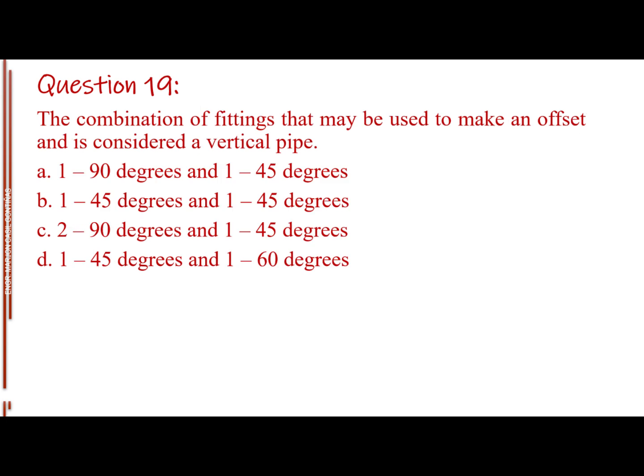Question number 19. The combination of fittings that may be used to make an offset and is considered a vertical pipe. Letter A, 1-90 degrees and 1-45 degrees. Letter B, 1-45 degrees and 1-45 degrees. Letter C, 2-90 degrees and 1-45 degrees. Letter D, 1-45 degrees and 1-60 degrees. The answer is Letter B, 1-45 degrees and 1-45 degrees.